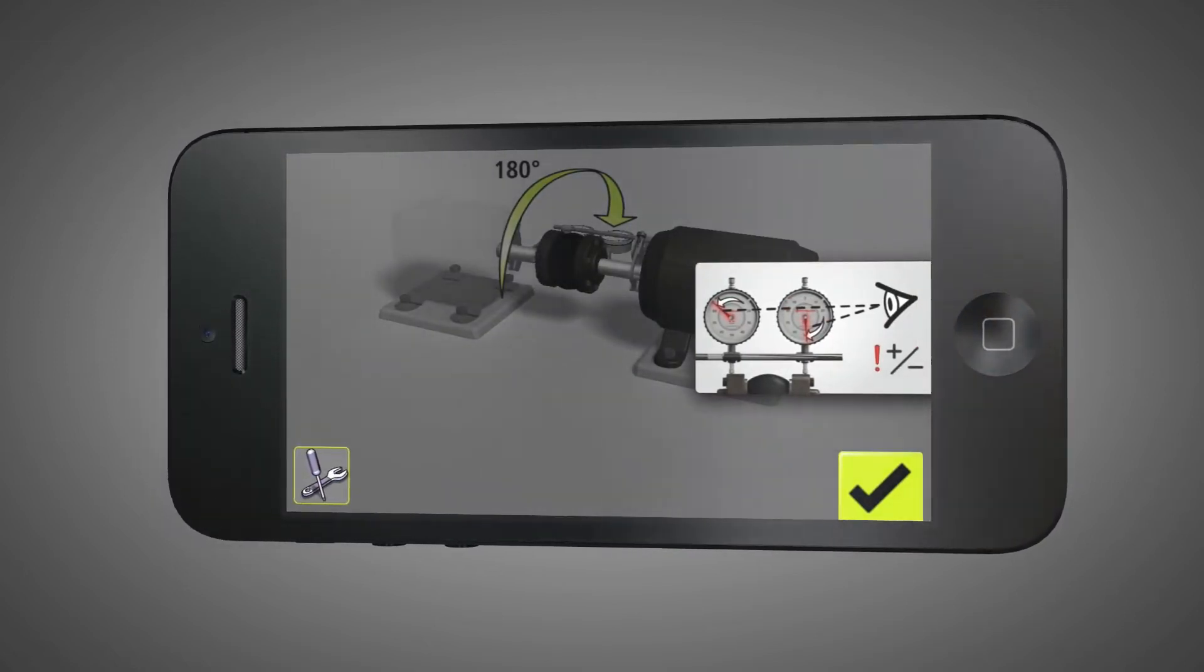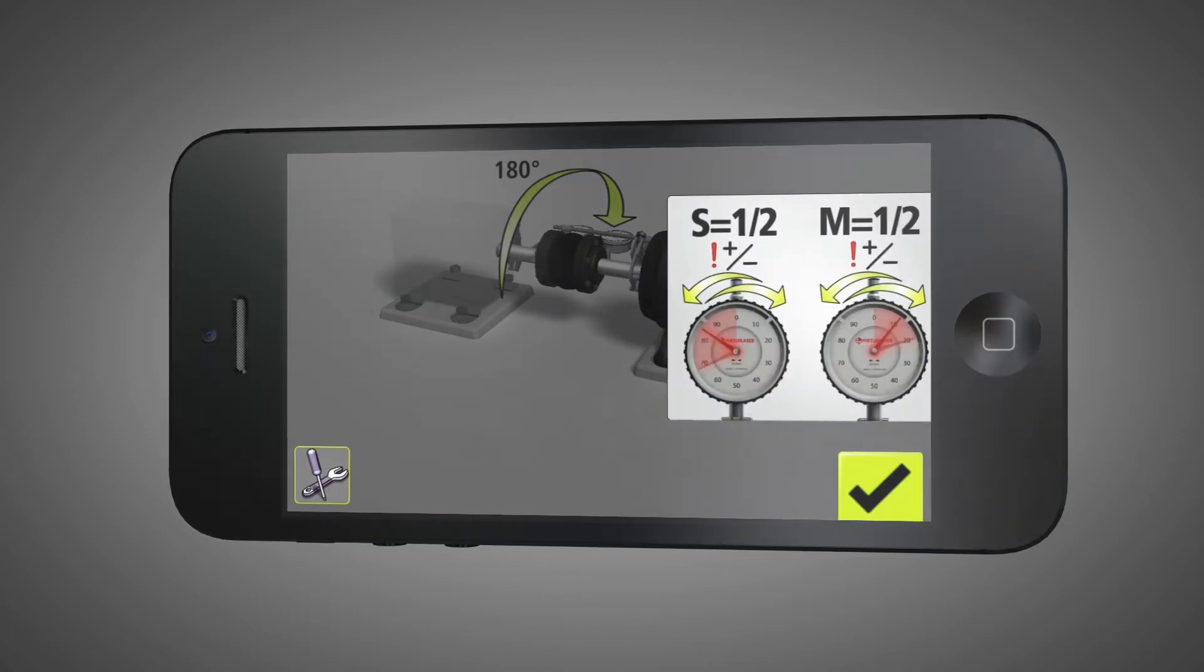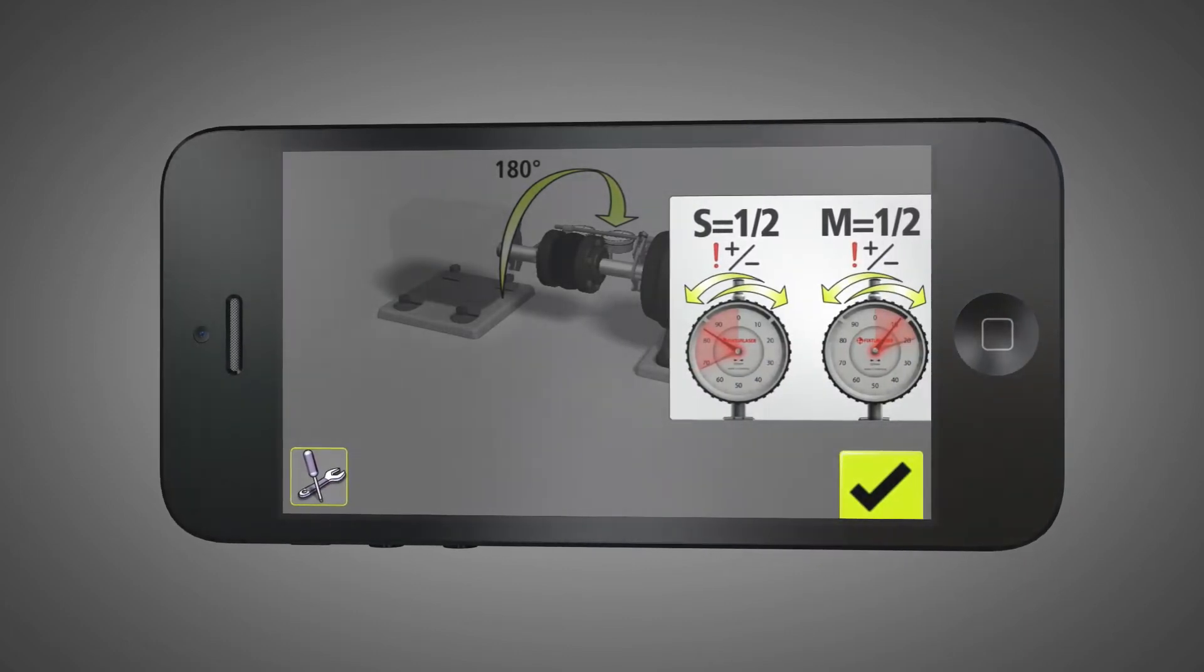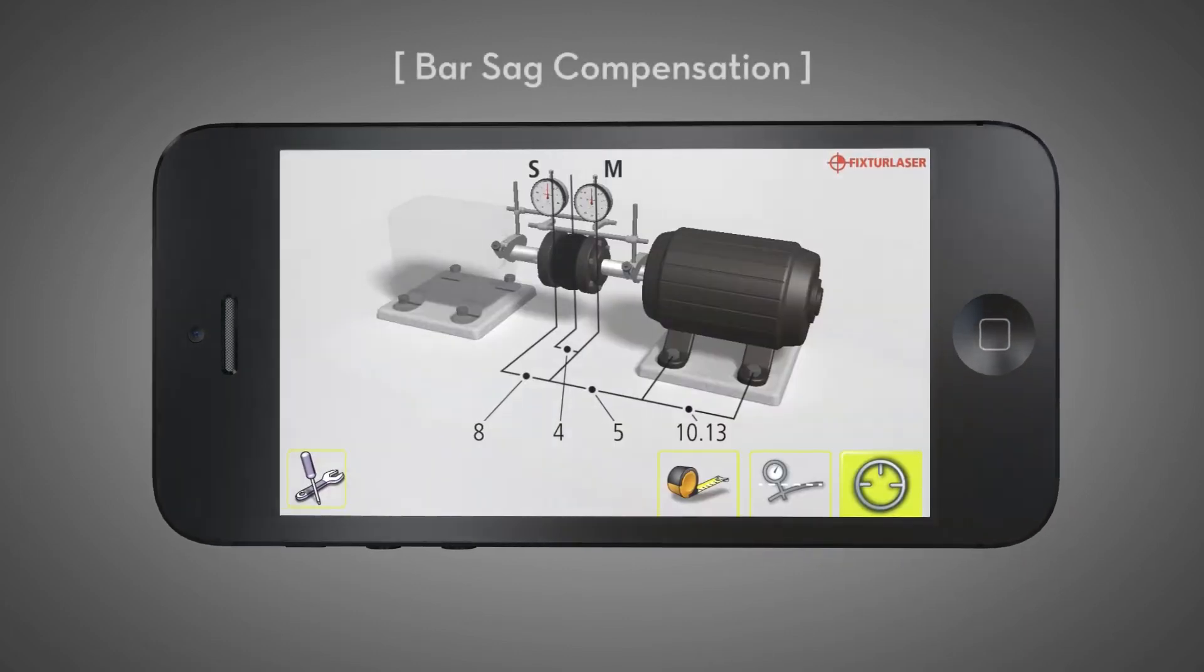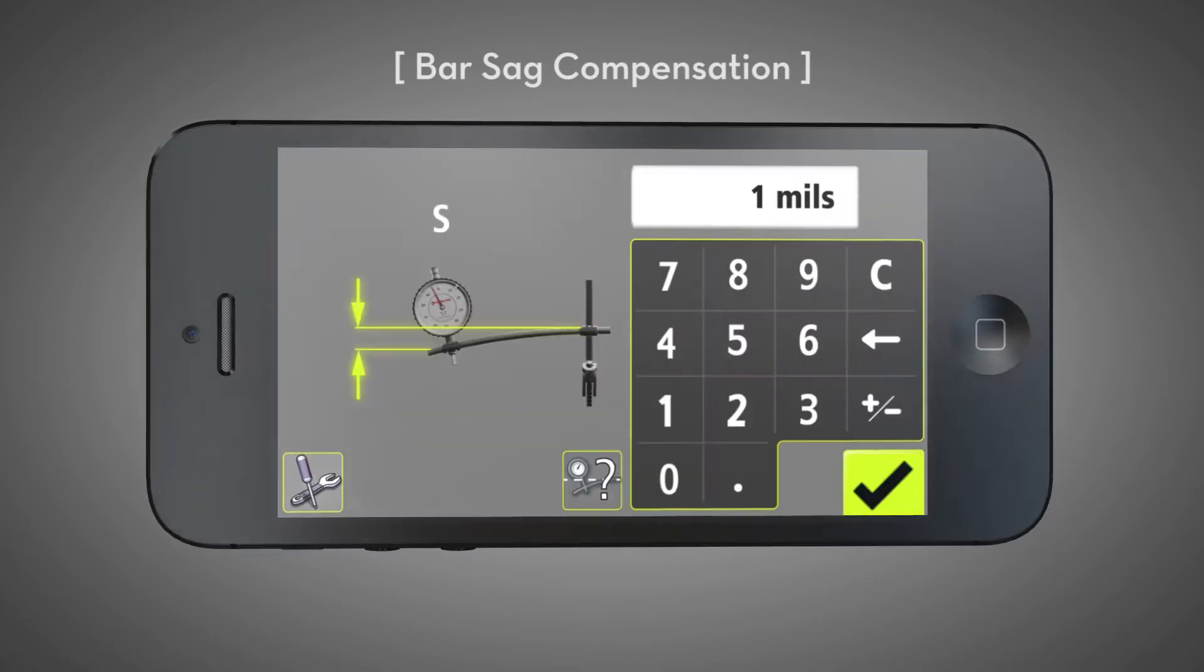Explicit on-screen instructions as well as on-screen warnings help the user avoid common pitfalls. Helpful prompts alert the user to compensate for bar sag.